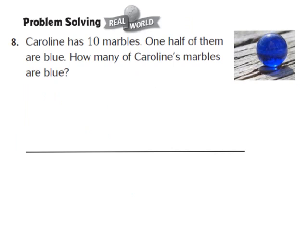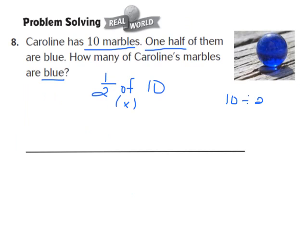Now let's take a look at question number 8. It says Caroline has 10 marbles. One half of them are blue. How many of Caroline's marbles are blue? We know Caroline has 10 marbles and one half of them are blue. So our problem becomes finding one half of 10 — and remember, the word 'of' means to multiply, so we're finding 1/2 times 10. Our first step is to identify the denominator, which is 2, so we divide our whole number 10 into two equal groups. 10 divided by 2 equals 5, so we need two equal groups of 5.